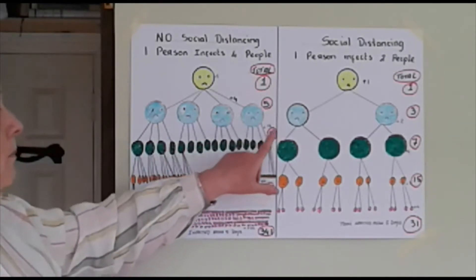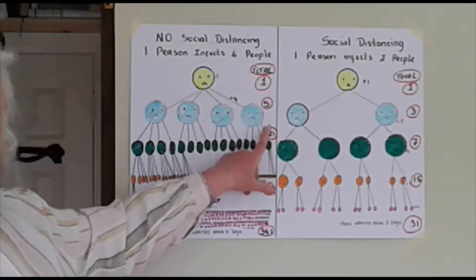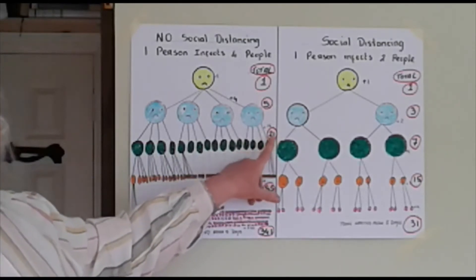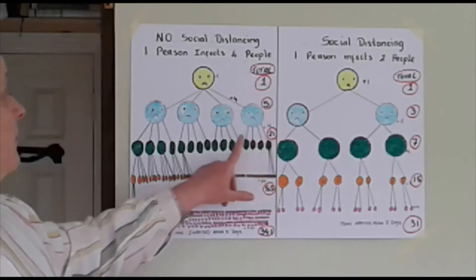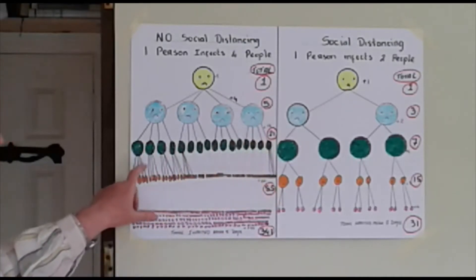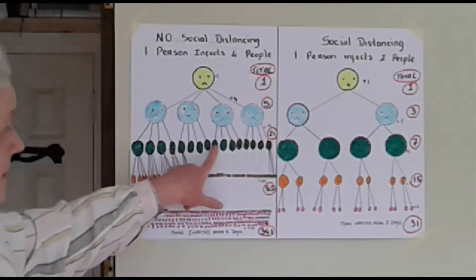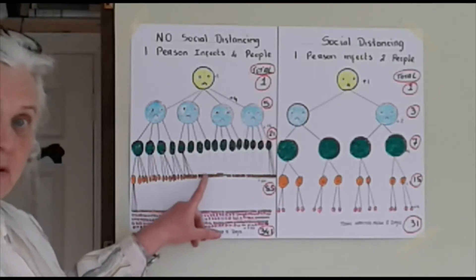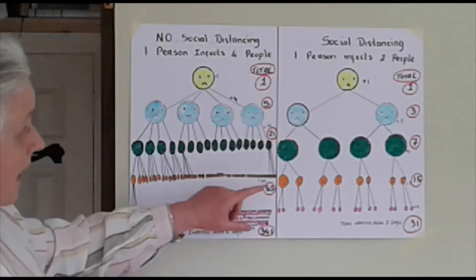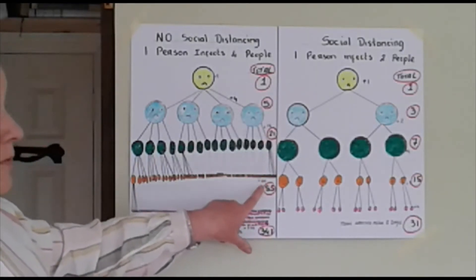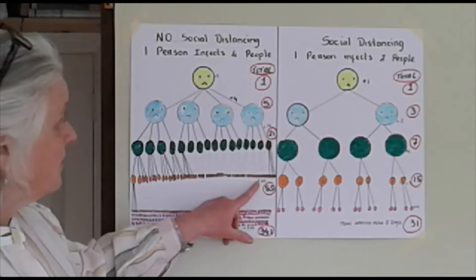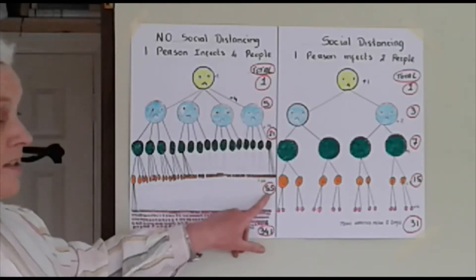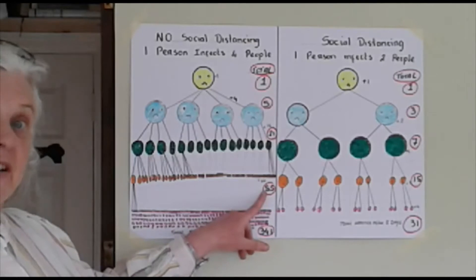So by day three we have another 16 people with it and a running total of 21. These 16 go out and about and they spread it to four people each, and now we have another 64 people with it. So on day four we add in 64 and we have a running total of 85.